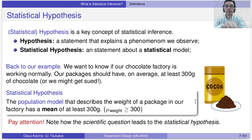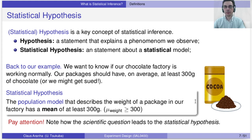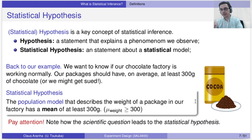A statistical hypothesis is a statement about a statistical model. For instance, we want to know if a chocolate factory is working normally. The statistical hypothesis here is that a population model describing the weight of a package in our factory has a mean of at least 300 grams — we can write this as μ(weight) ≥ 300. Note that we start with a scientific question — is my factory broken? — and from that scientific question we create a statistical hypothesis: the mean production of the factory is greater than or equal to 300 grams.